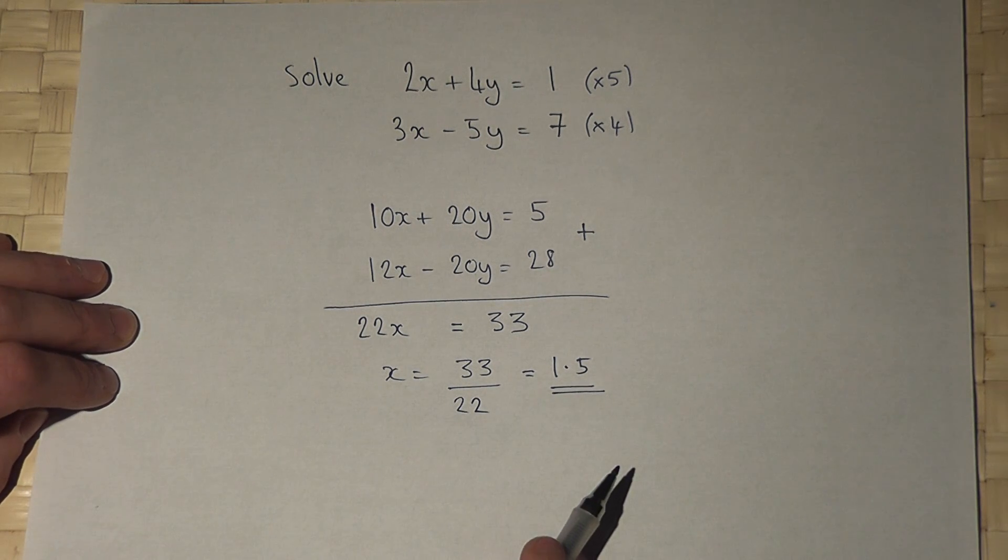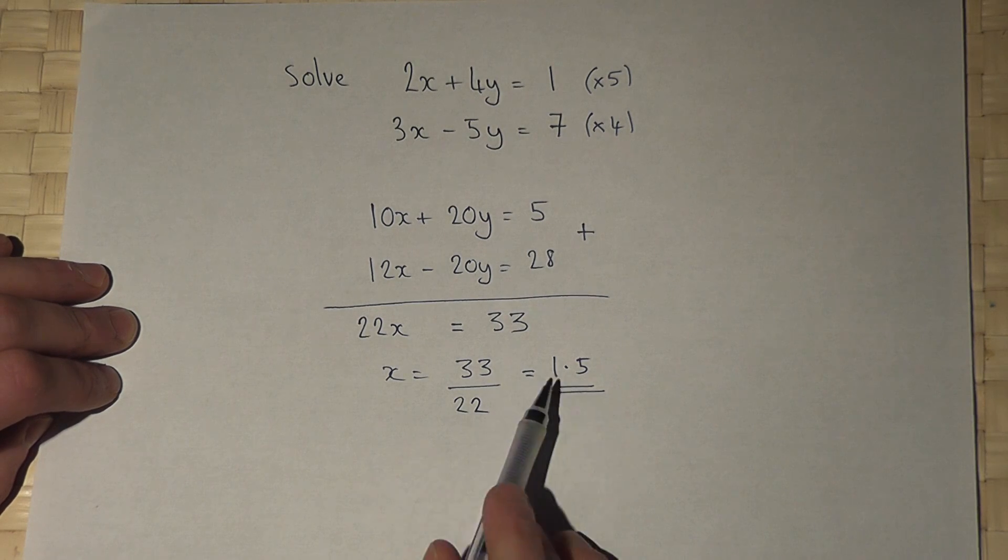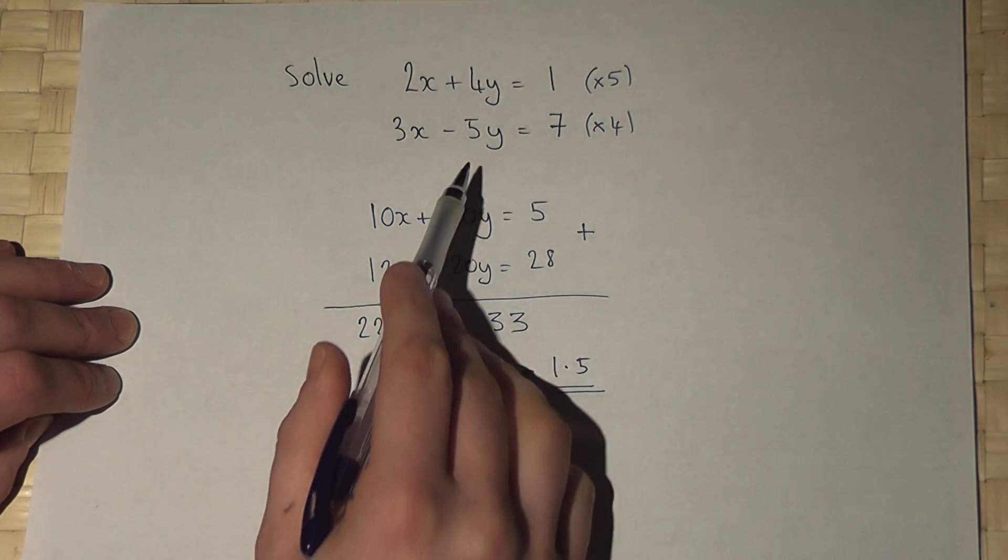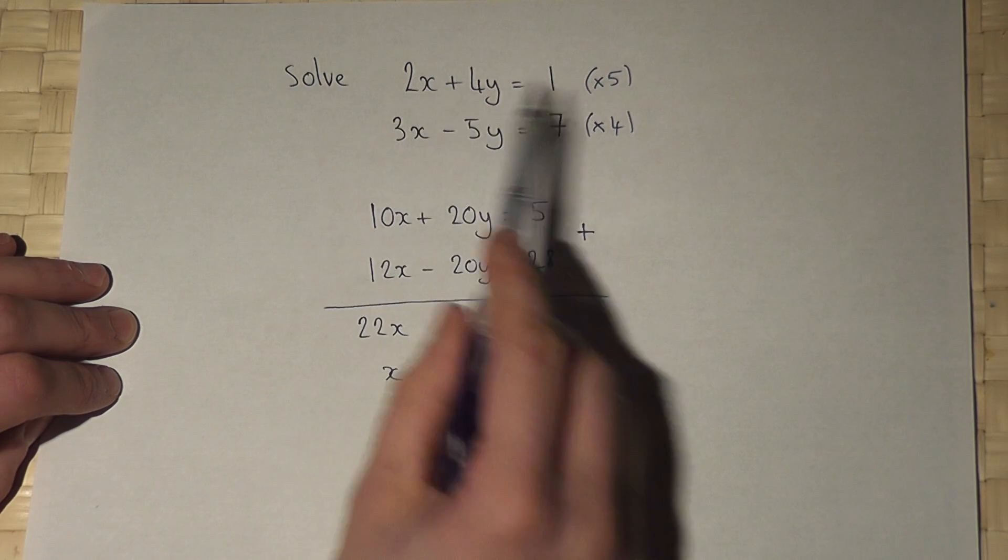So we've found x, we now have to find y. Now to do this we sub 1.5 into any of the equations above, and I think the top one is the simplest.